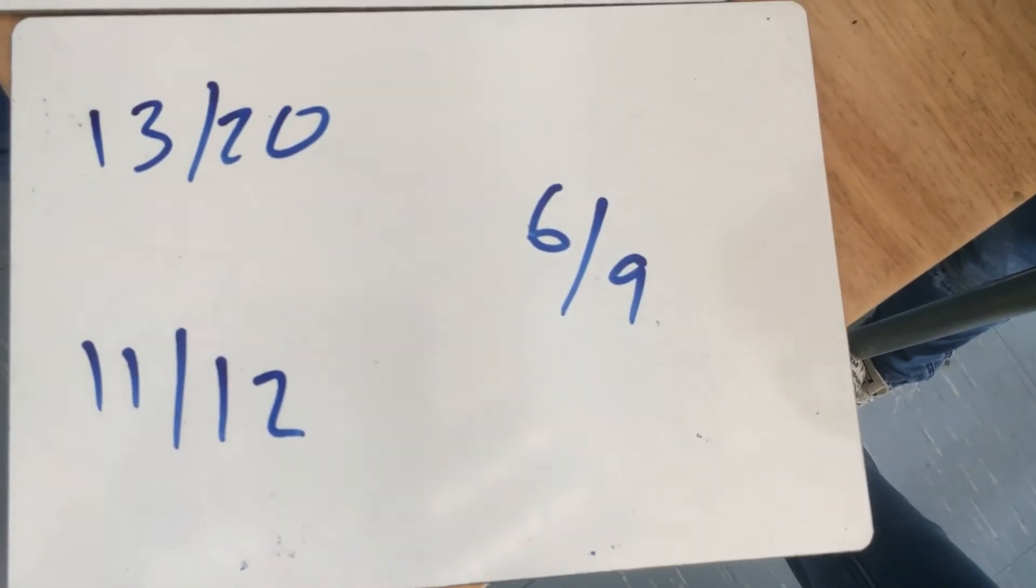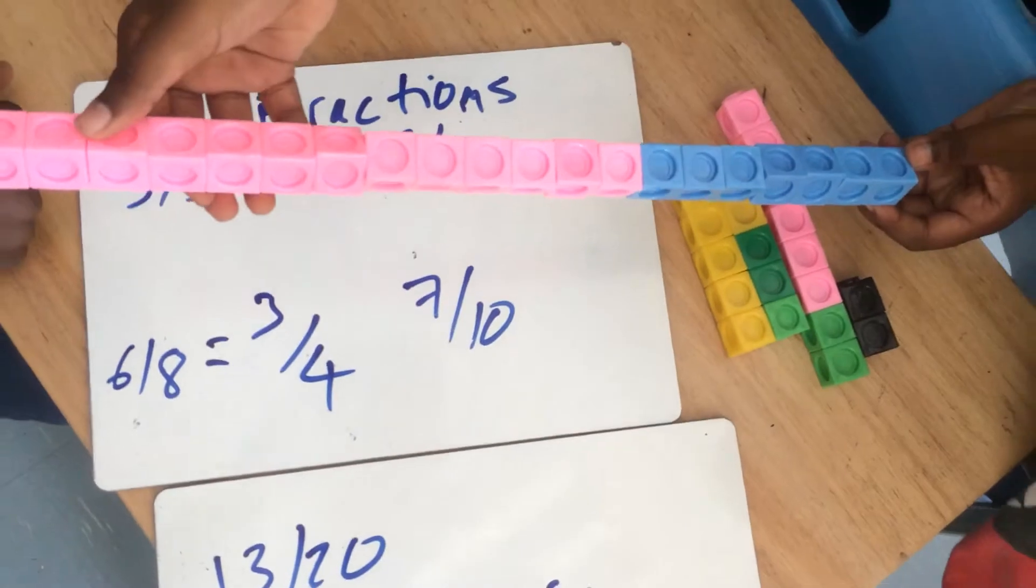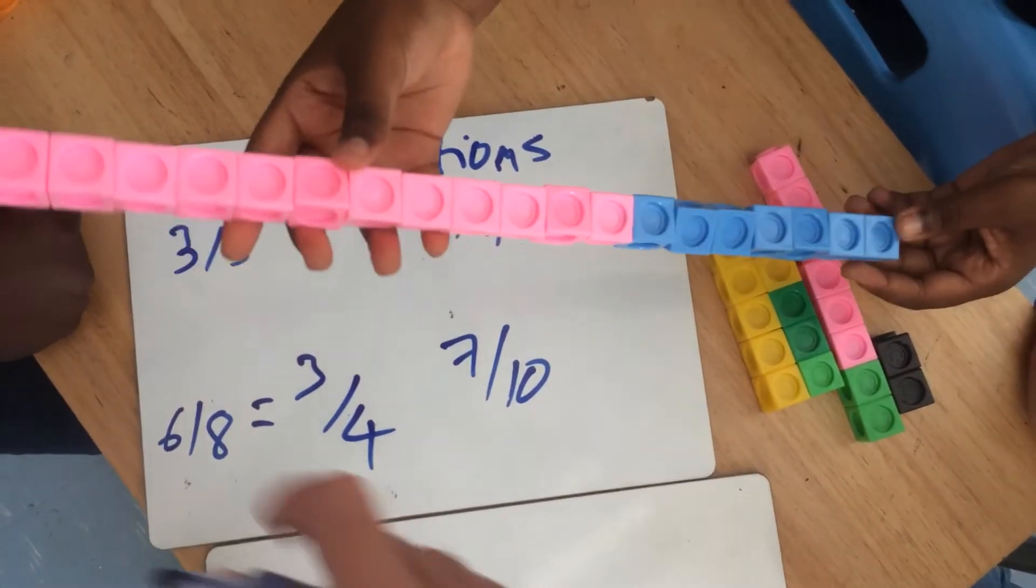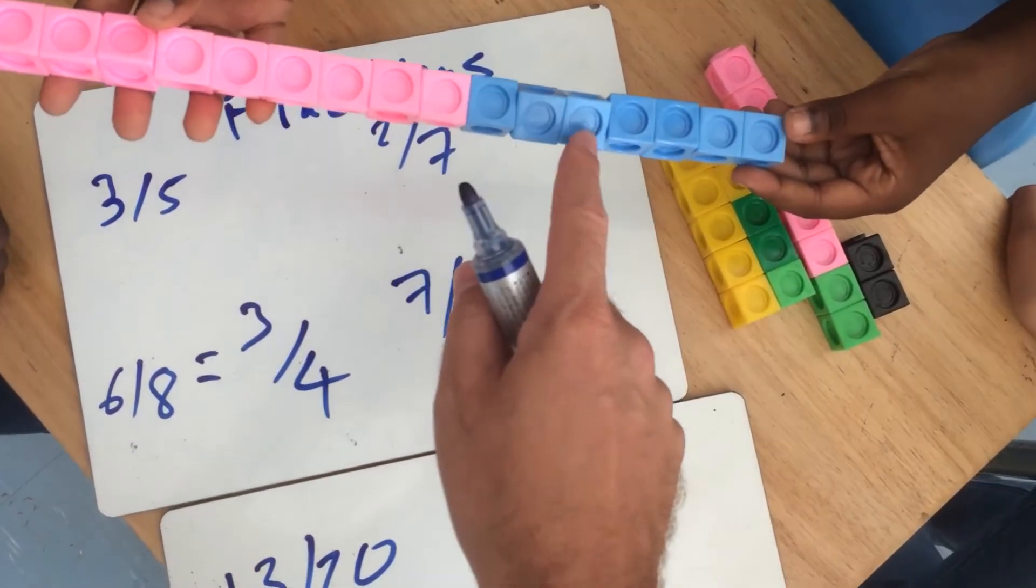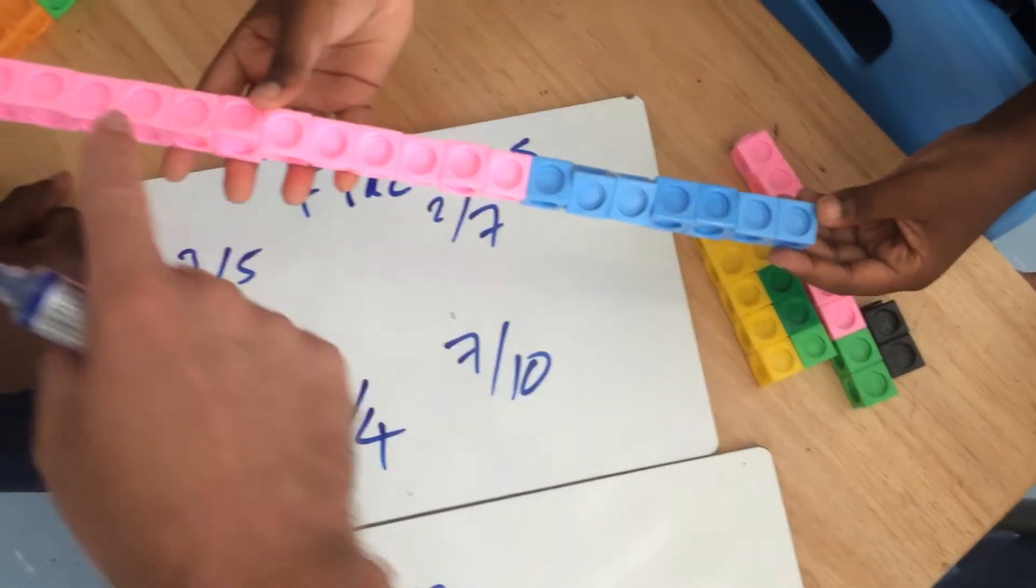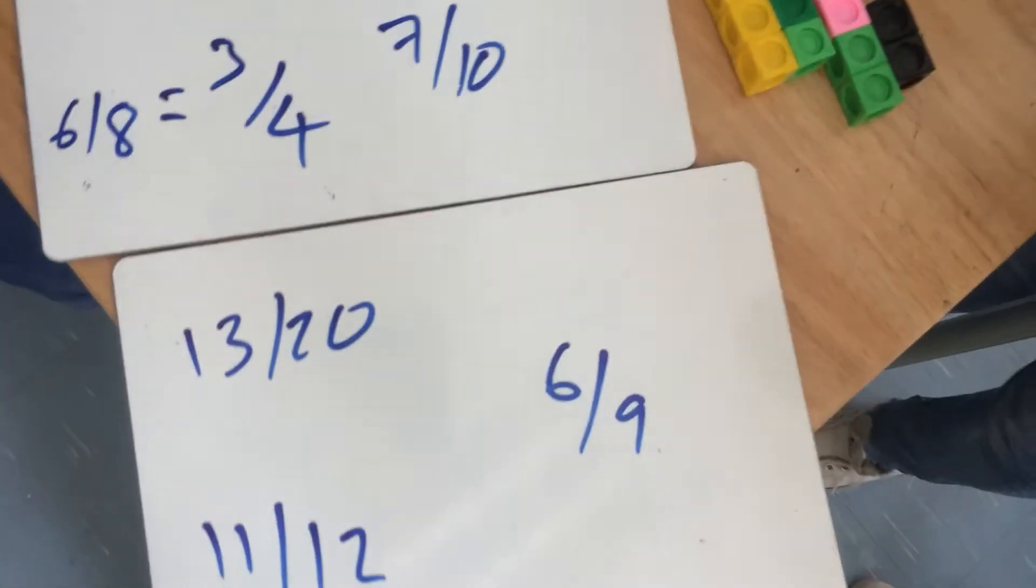Three more. Do we have thirteen out of twenty? Here we have a long line of thirteen pink ones and seven blue ones. Two, four, six, eight, ten, twelve, thirteen, fourteen, fifteen, sixteen, seventeen, eighteen, nineteen, twenty. So thirteen out of those twenty were pink there. Brilliant.